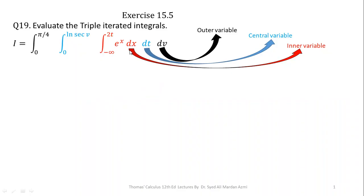In the process of integration, we will always start integration with respect to the most inner variable. Here the inner variable is x, and the limits of x are minus infinity to 2t. Then, integrating with respect to the most inner variable, we will apply the rule of integration with respect to the central variable. Here the central variable is t, whose limits are 0 to natural log of sec of v. And then we will apply rules of integration with respect to the most outer variable. Here the outer variable is v, whose limits are 0 to pi by 4.